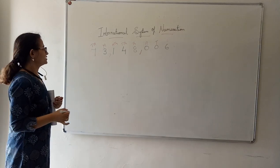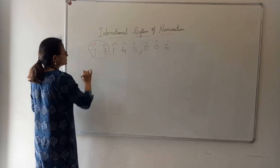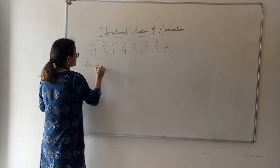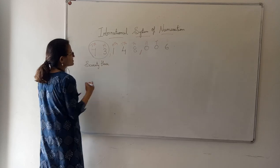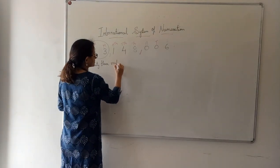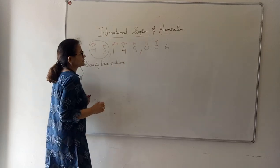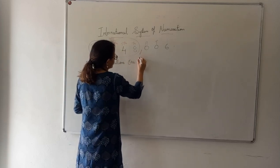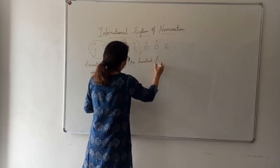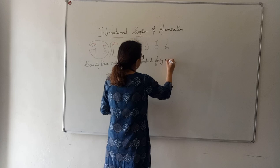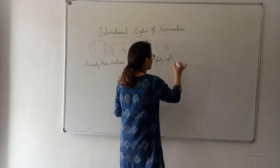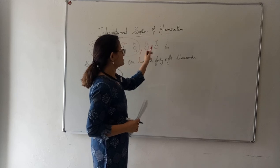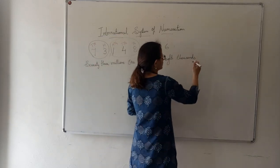Now, how to write the number name? In the millions family, the number is 73, so we write 73 million. In the thousands family, we have 3 digits: 148, so we write 148 thousand. The 100's and 10's places have 0 in them, so no need to write those — we write just 6.